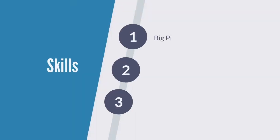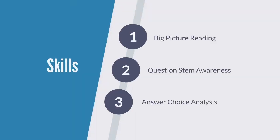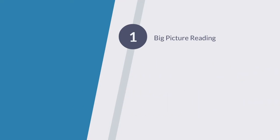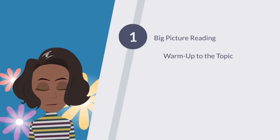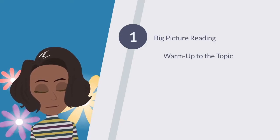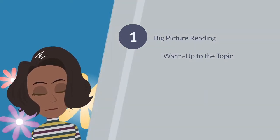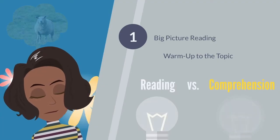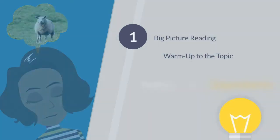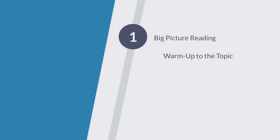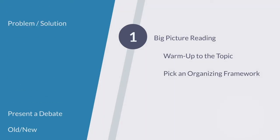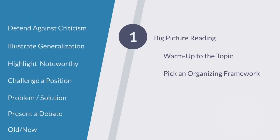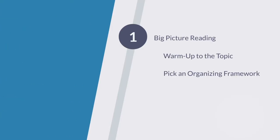We're zooming in on the big picture reading skills of Reading Comp. One of the first tactics is just making sure you give yourself the space to warm up to a topic. A lot of us do not retain a sentence when we first read it, so we have to break it into bite-sized pieces, develop a mental picture, think of a concrete example until we can actually feel like, oh, I know what we're talking about. Skill number two is to pick an organizing framework. More than one might apply, but once you pick one, it anchors you to a very simple story that only has two or three big ideas.